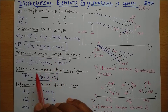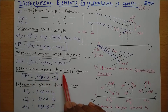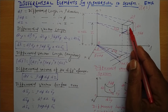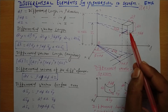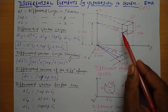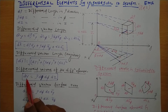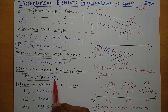We can also find the differential volume of the differential element. This differential element appears as a cubical structure, and since we are considering a differential amount, we find the differential volume. The differential volume is defined as rho d rho d phi dz. This is very important for numericals.